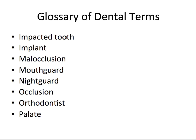An impacted tooth is a tooth that's blocked from coming out through the gums by another tooth, bone, or soft tissue. An implant is a device put into the jawbone to replace a missing tooth and/or hold a prosthesis such as a crown, bridge, or even anchor a denture in place. Malocclusion is when the upper and lower teeth aren't lined up well in order to bite and chew properly. A mouth guard is a removable device worn over the teeth to protect them from damage during sports. A night guard is similar but worn at night to protect teeth from damage due to bruxism.